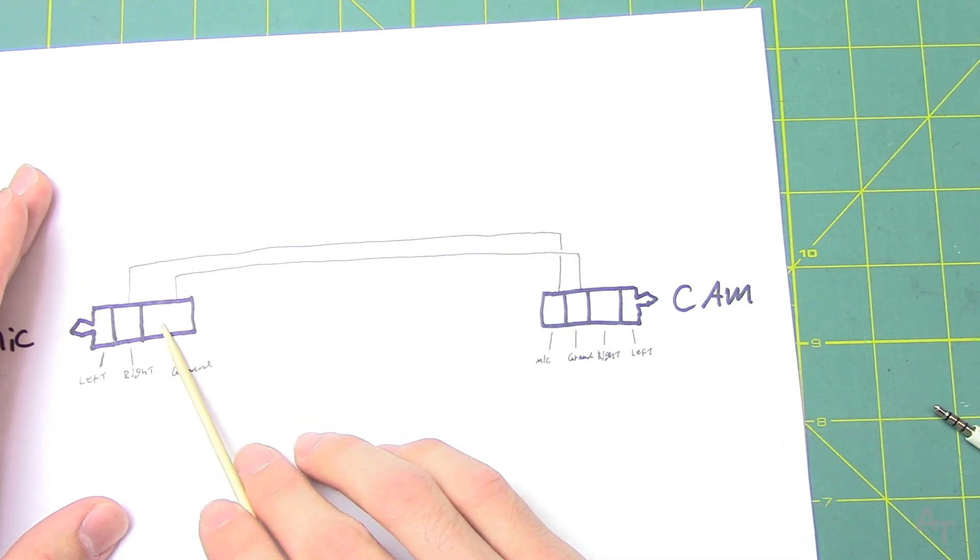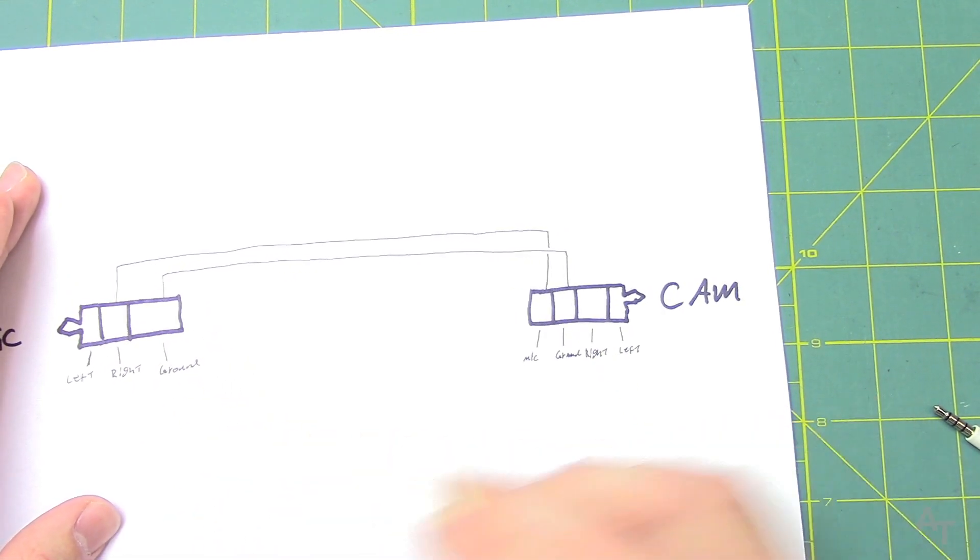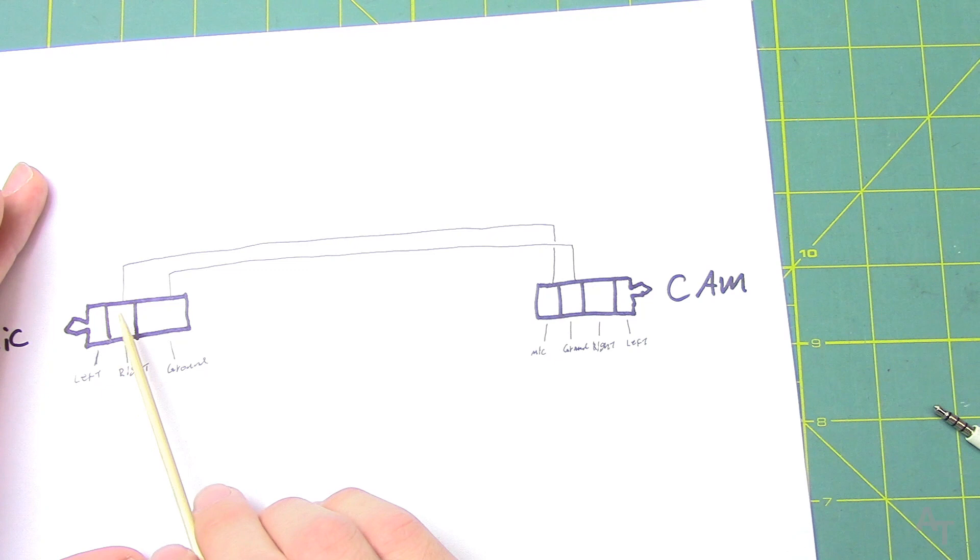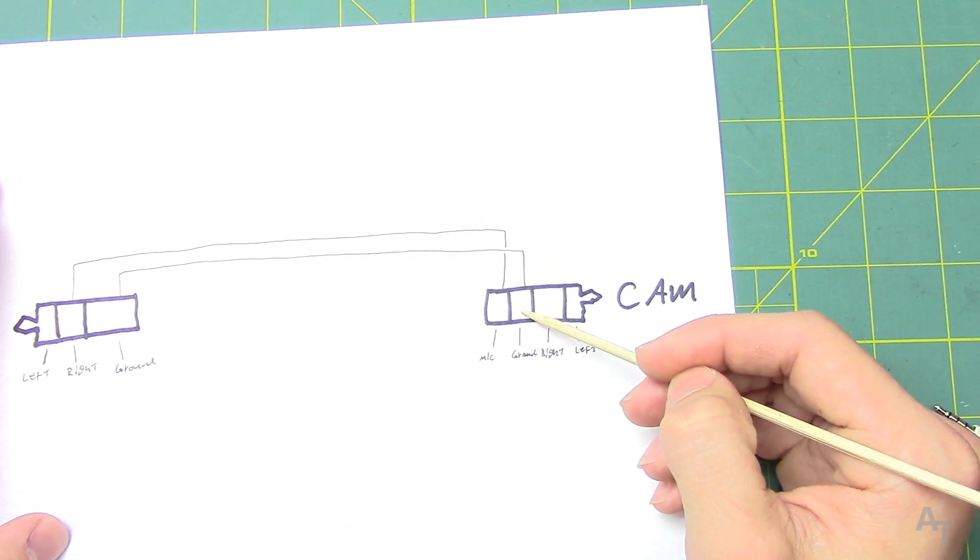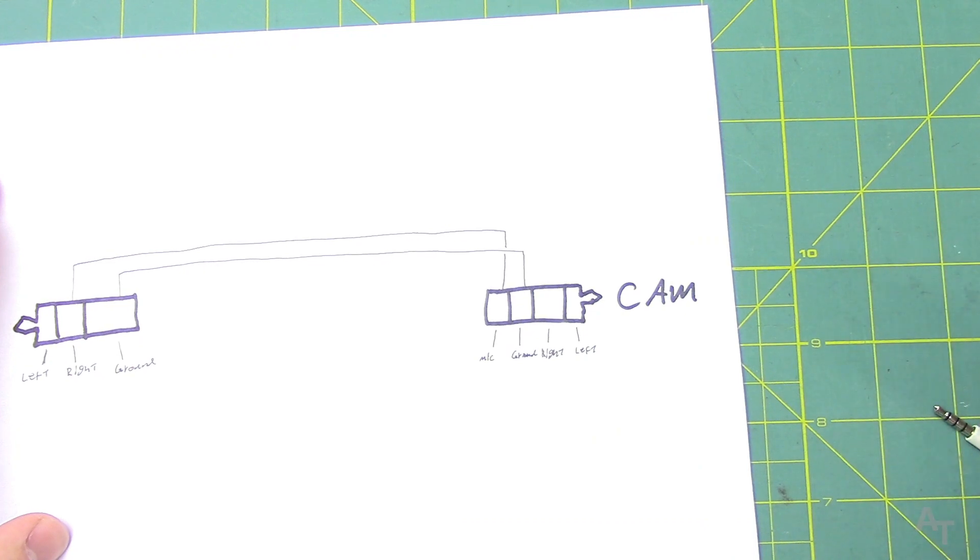And then our ground is just going to connect to the ground. So all we need here is the right audio and the ground connected to the mic and the ground on this other side. That's it. So that's what we're going to do.